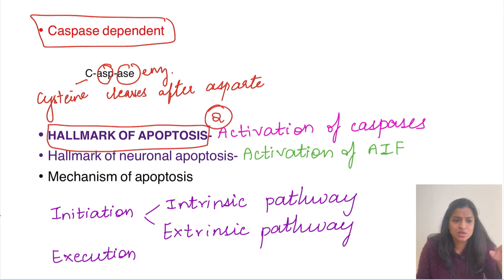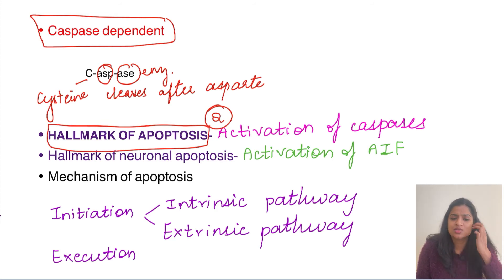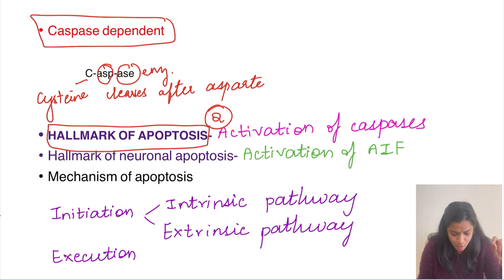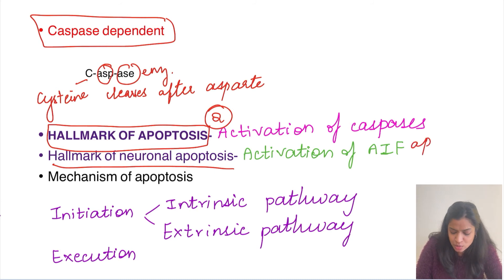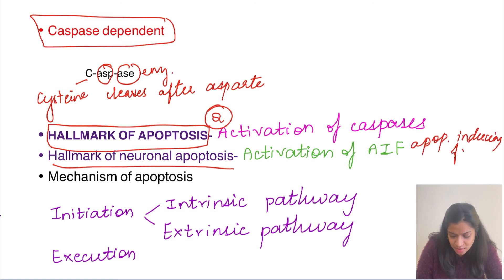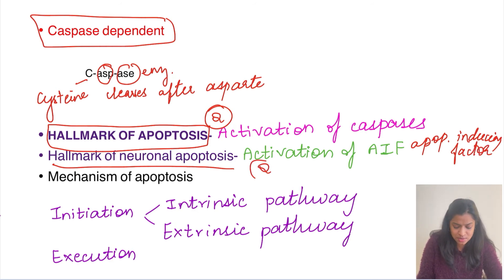Neurons do not have caspases, so apoptosis in neurons works differently. The hallmark of neuronal apoptosis is activation of AIF — apoptosis inducing factor — which is responsible for neuronal apoptosis.